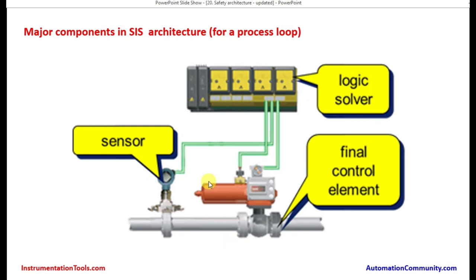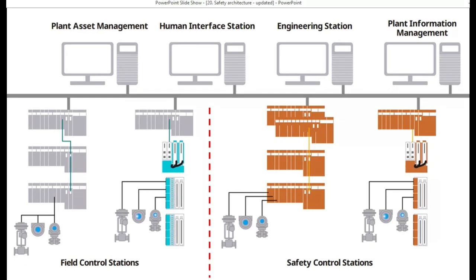All the components shown in different presentation slides are almost similar — they are only shown in different ways for better understanding. Again, this is a process showing the sensor doing the pressure measurement and sensing, going to the IO card. From the IO card, the logic solver processor performs the processing function and gives a command to close the actuator — close the valve. So far we have been seeing sensor, logic solver, and actuator — this final control element.